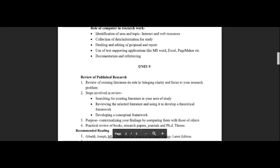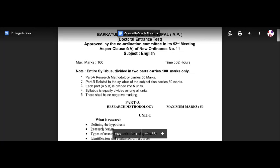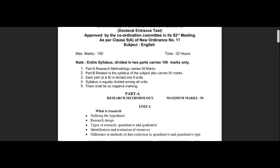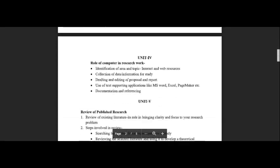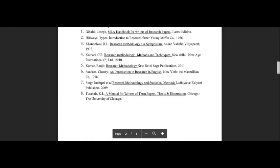In Unit 5, we have the review of published research — what it is and what are the steps. All of these things you will be able to study, and they will give you objectives that you will have to answer. This Part A is basically for arts subjects. If you have any subject in arts, your research methodology will be the same. If you have any subject in social science, your research methodology will be different — every subject will be different.